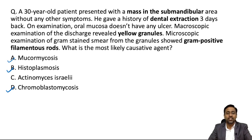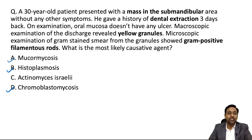It is easy to solve this question just by seeing this information, but the same question is not going to get repeated with the same options. So you need to know the other features of the disease and organism to be able to solve any question related to this topic. Let's see the significance of the mass in the submandibular area, the significance of the dental extraction history, the importance of yellow granules, and whether the age of the patient is significant.